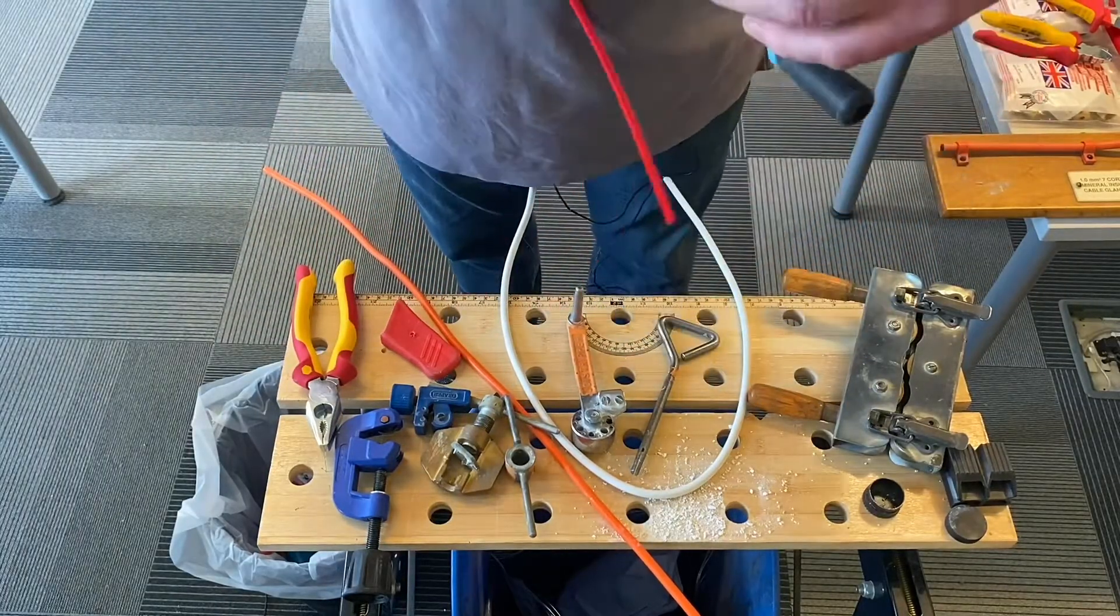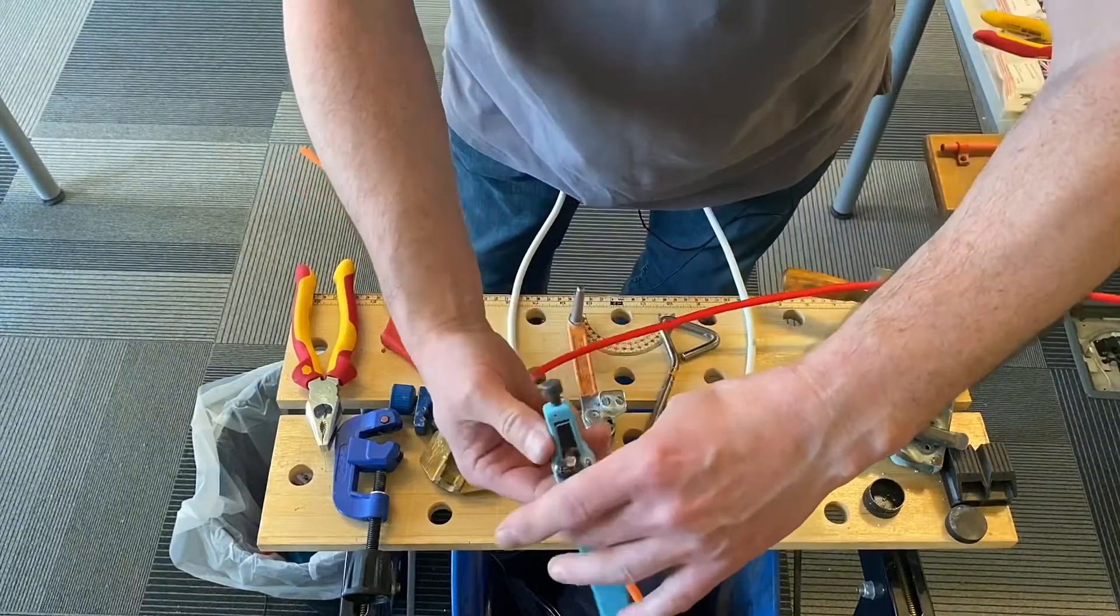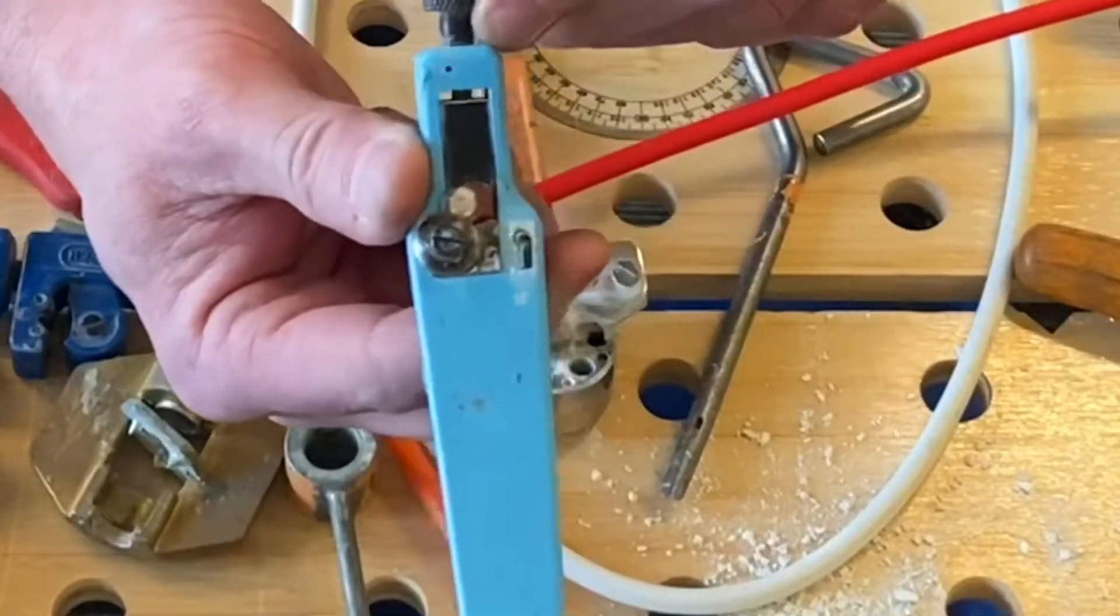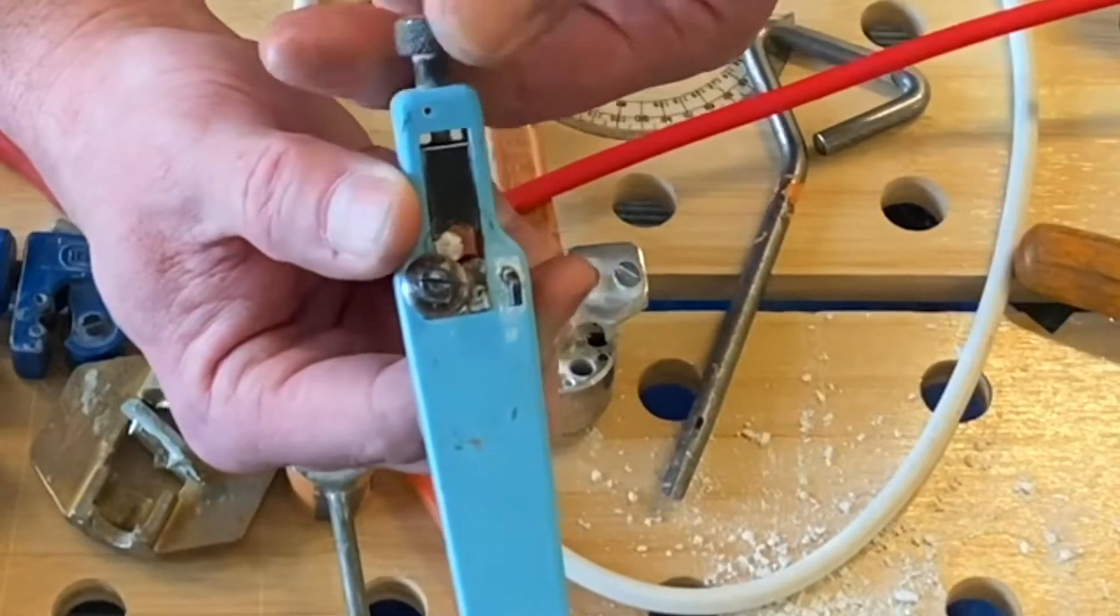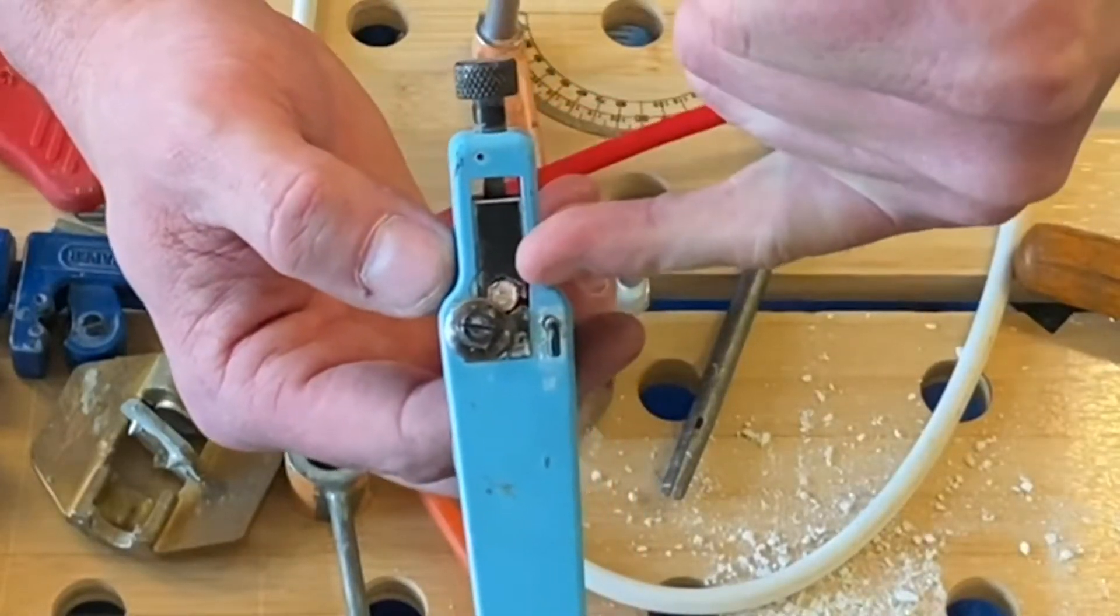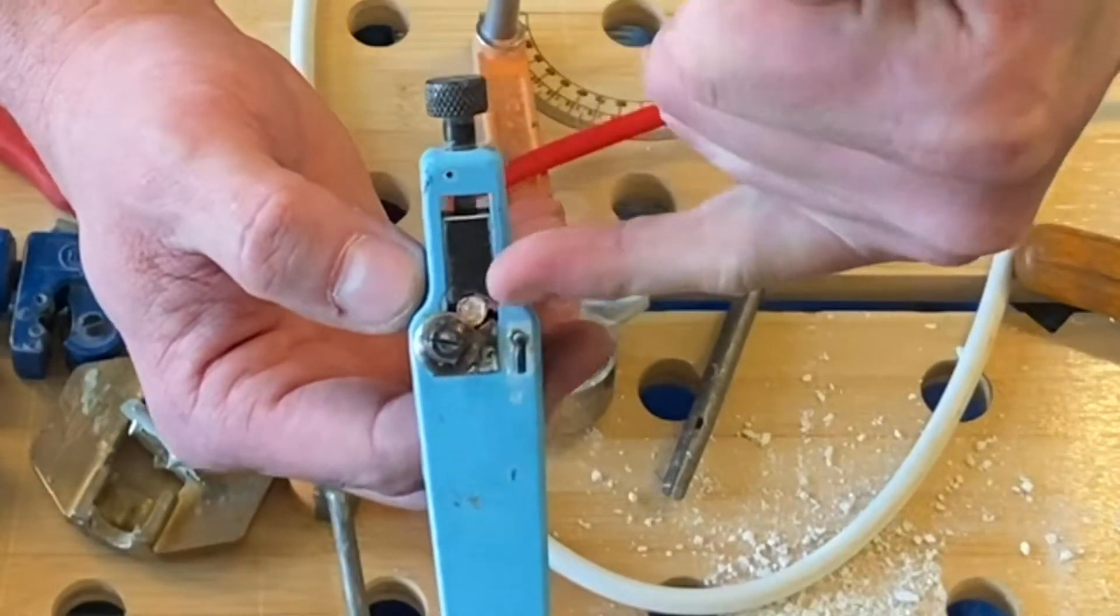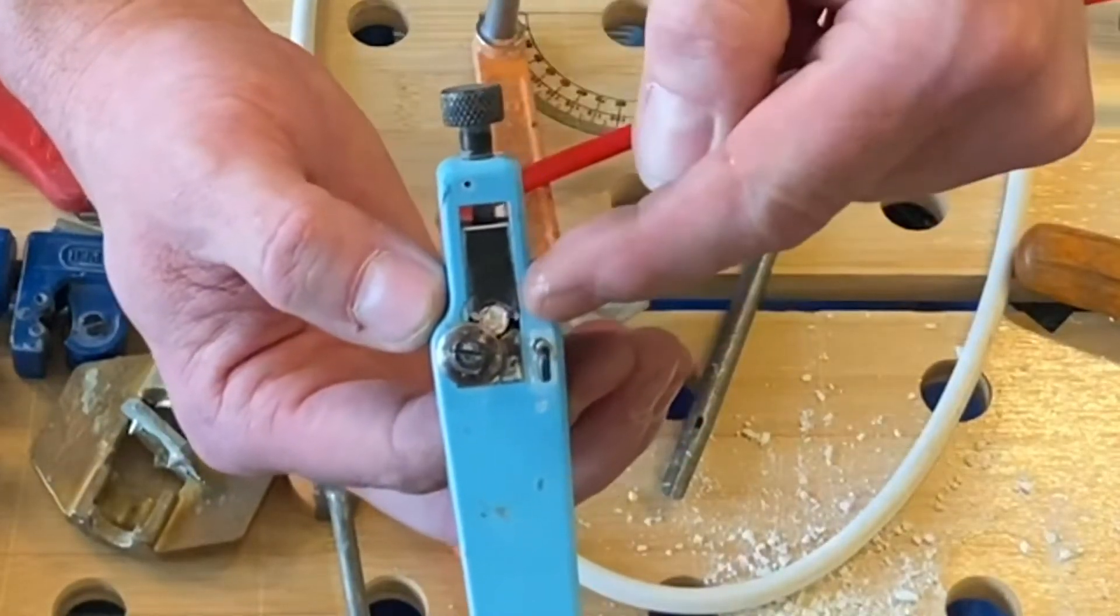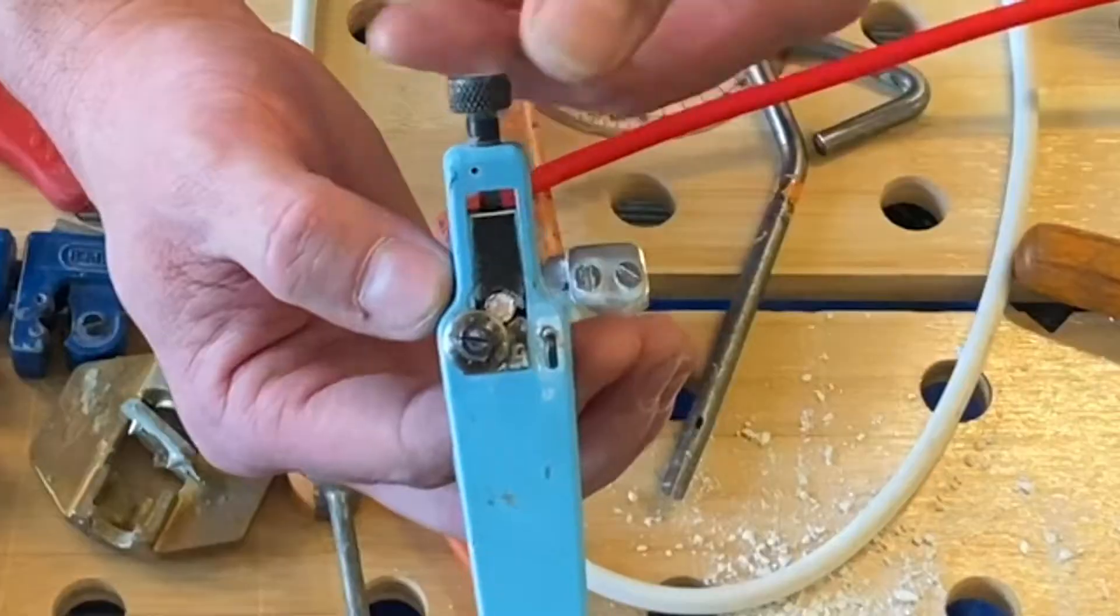Now this one, people go wrong with this regularly. So I'm going to put it in like so and I'm going to offer the end so it's behind the actual blade itself, so the blade's in front of the actual conductor. So the blade's first and behind it is the actual outer cladding.